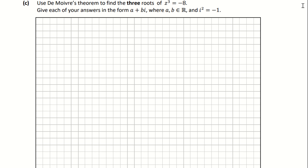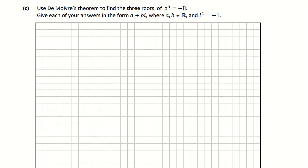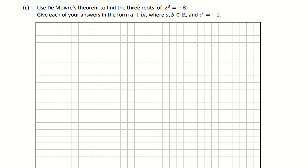Now we're looking at question 1c: use De Moivre's theorem to find the three roots of z to the power of 3 equals minus 8. When answering these, we first need to turn our complex number into polar form. So we want to turn minus 8 plus 0i into r times cos theta plus i sine theta.